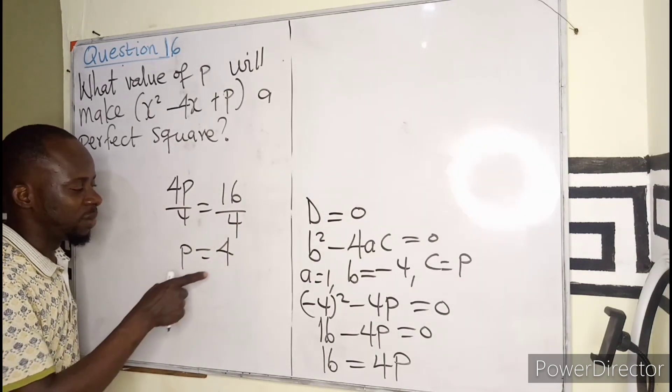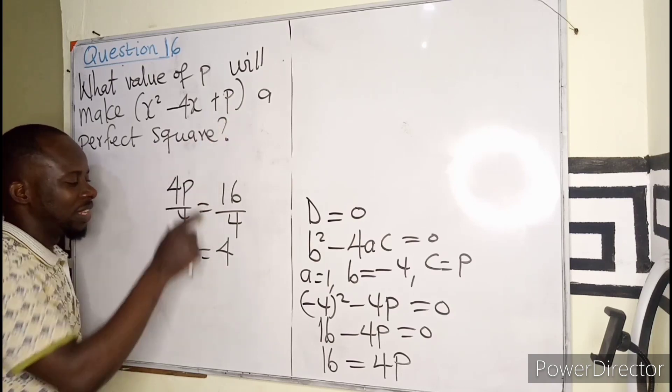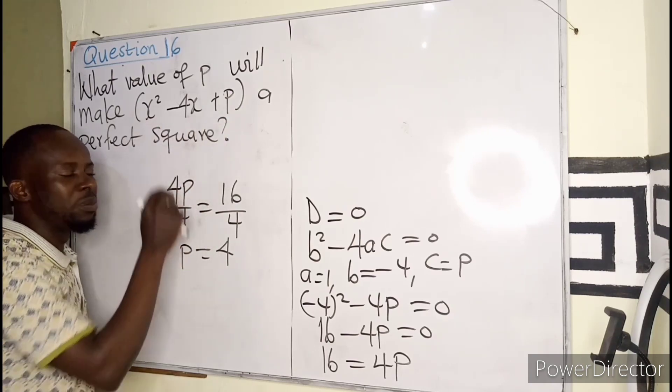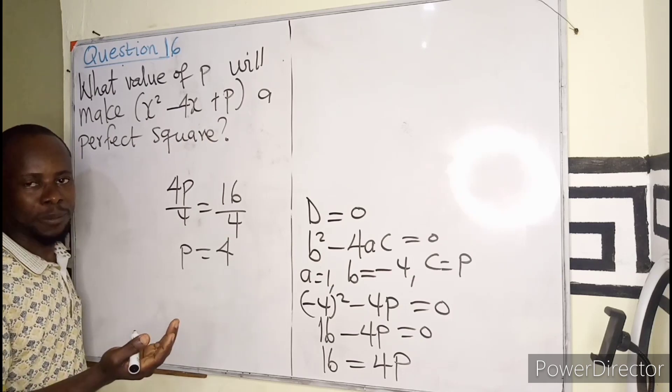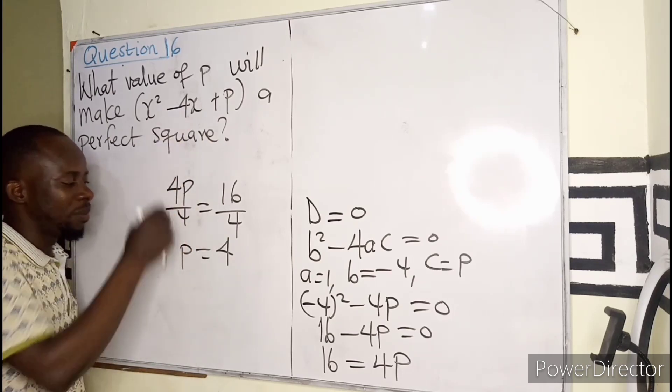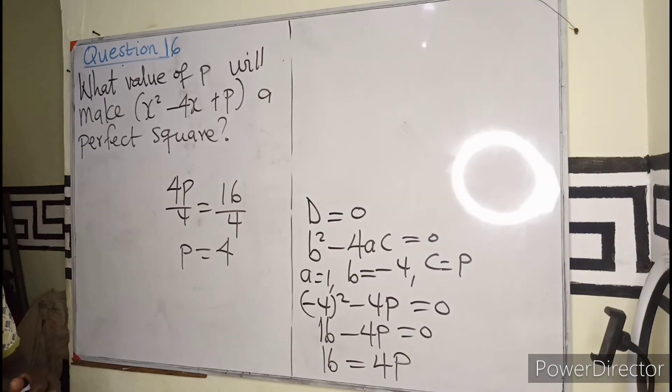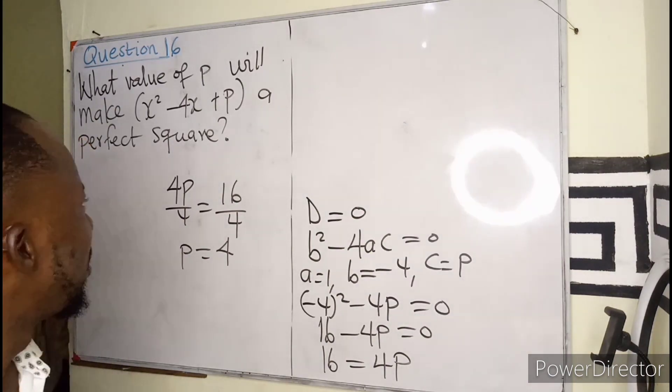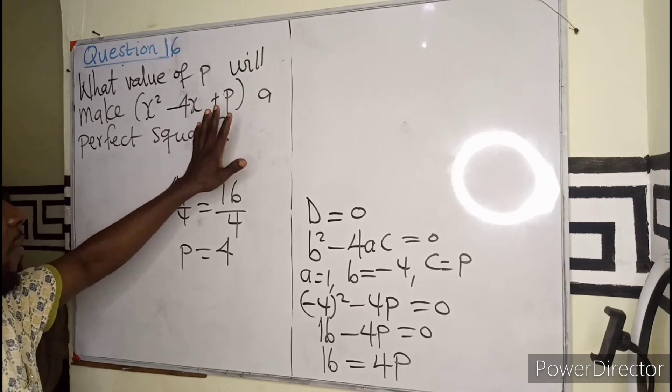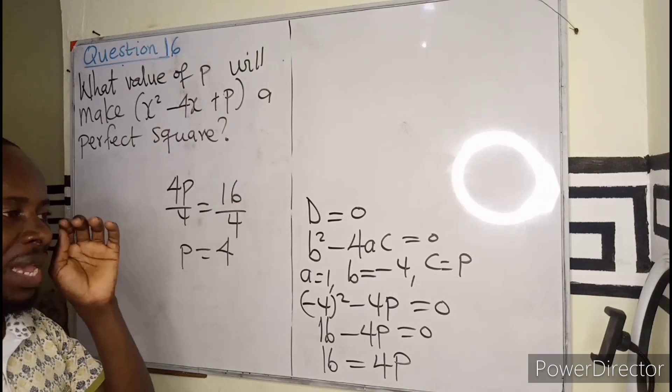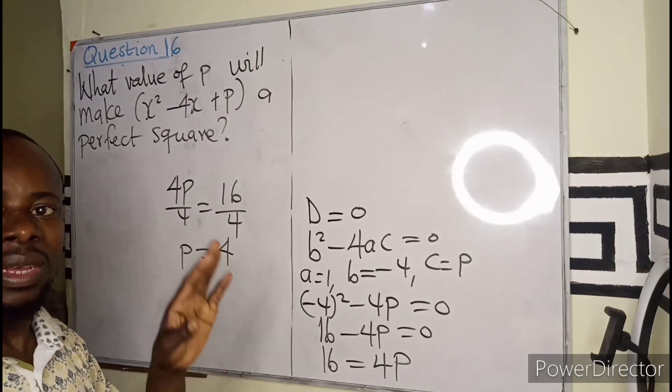It means P must be 4 before this equation becomes a perfect square. Before this equation becomes a perfect square, the possible answer, I think, is answer C on the question paper.